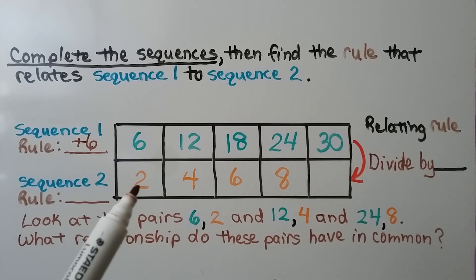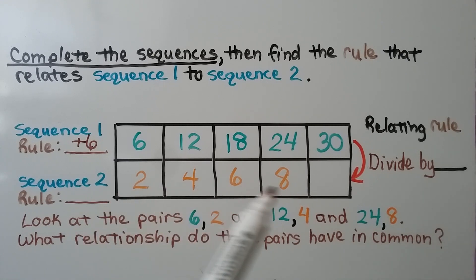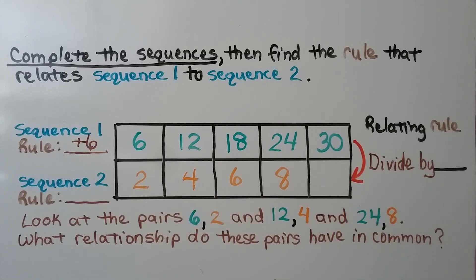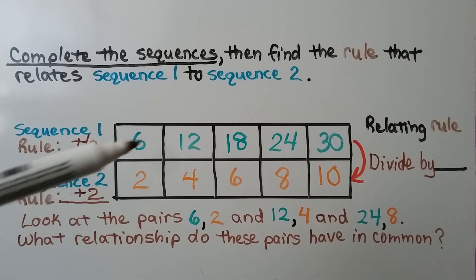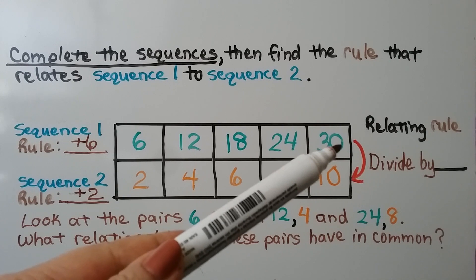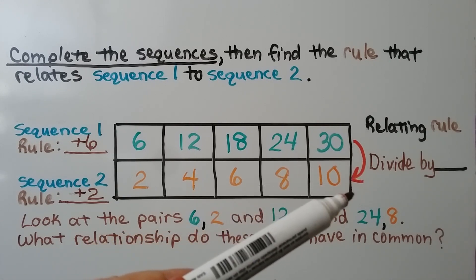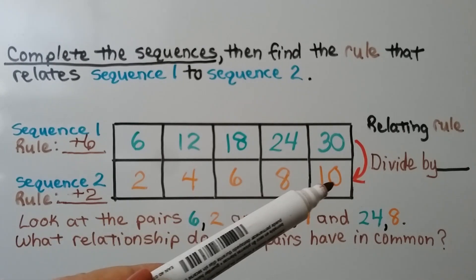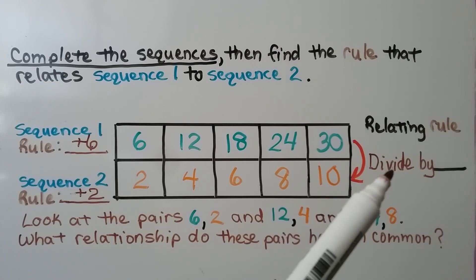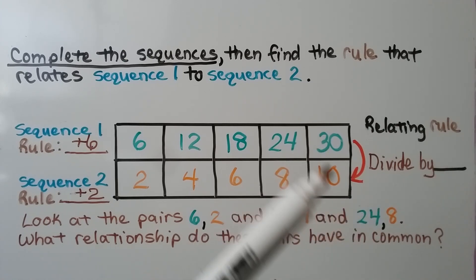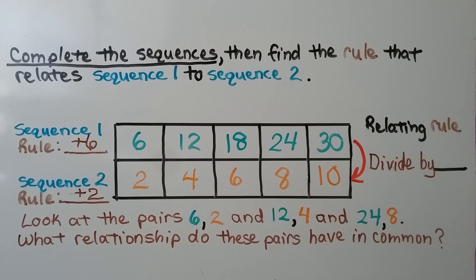We look at the terms in sequence 2: 2, 4, 6, 8 — the rule is plus 2, so the missing term must be 10. Now we need to find the rule that relates sequence 1 to sequence 2. Notice the arrow and the direction it's going — it goes from 30 to 10, meaning it's decreasing, so we're going to subtract or divide. 30 divided by 3 is equal to 10.